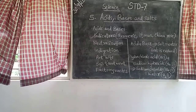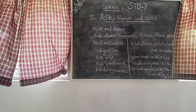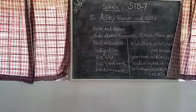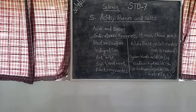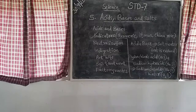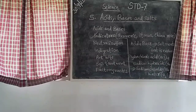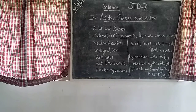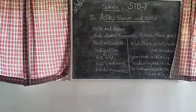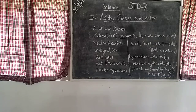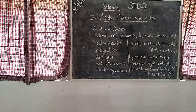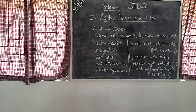Next is acid rain. The rain containing excess of acid is called acid rain. Rain becomes acidic because of carbon dioxide, sulfur dioxide and nitrogen dioxide, which are released into the air as pollutants. These dissolve in raindrops to form carbonic acid, sulfuric acid and nitric acid respectively.